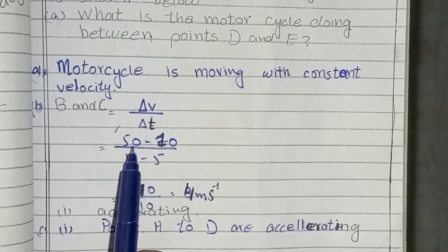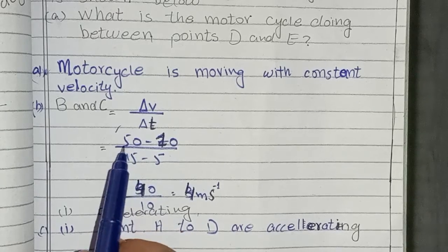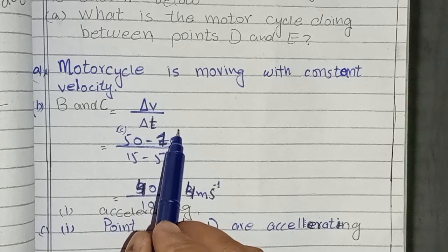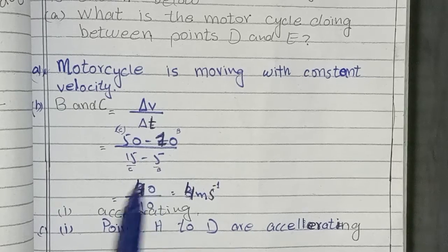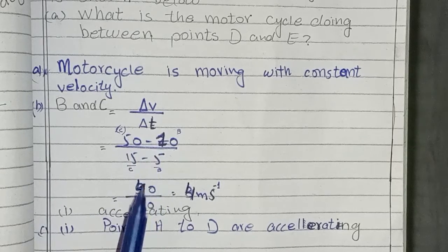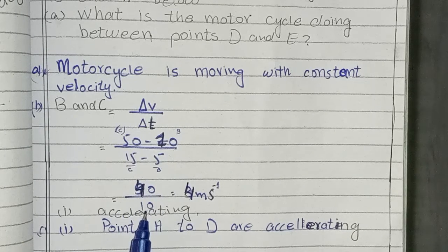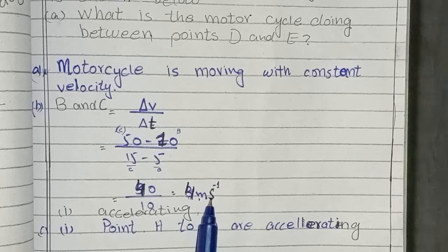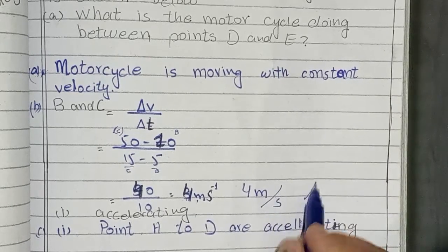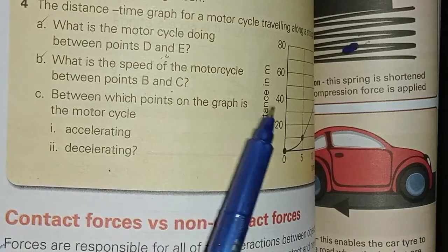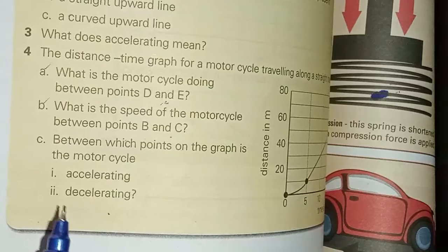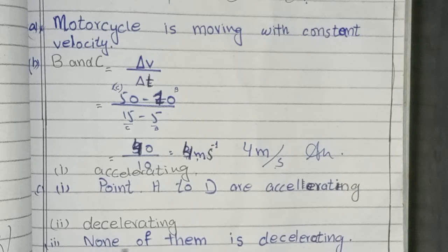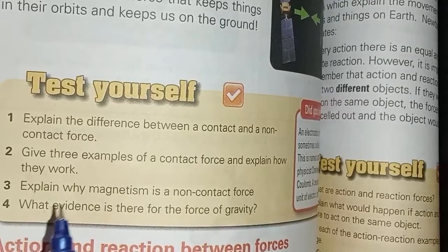Delta velocity, you can write 50. This velocity is given, this velocity is C, this is B. Here 50 minus 10 divided by 10 seconds. Here cutting 0-0, we will cut and it will be 4 meter per second squared. This is the answer. Between which points on the graph is the motorcycle first accelerating, second is decelerating? Accelerating we write point A to D are accelerating. Decelerating we write none of them is decelerating.